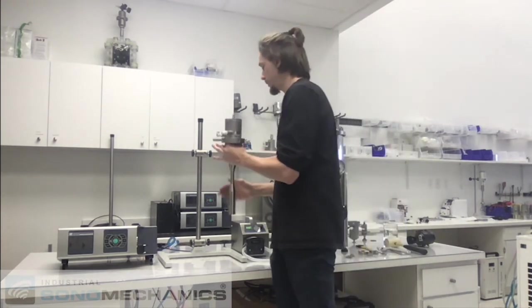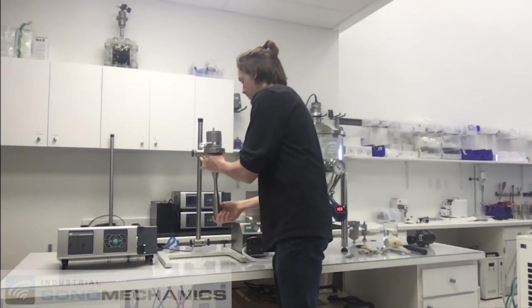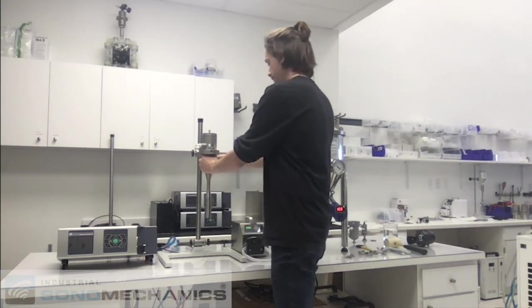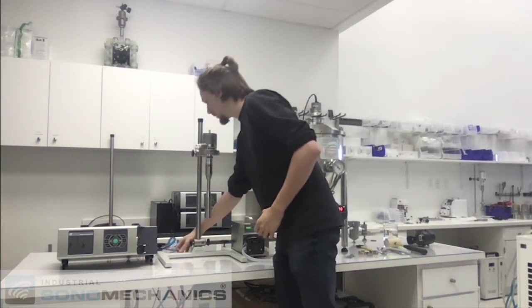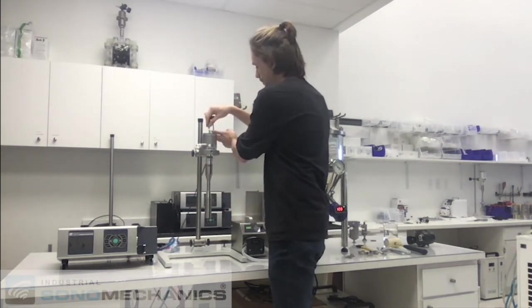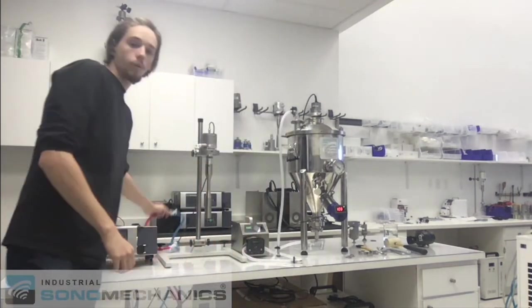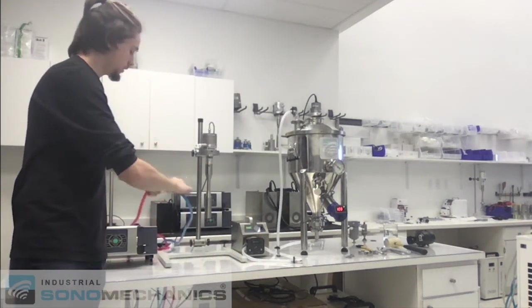Now we're going to place this stack to the clamp. Tighten down your clamp. And connect your ultrasound cable to the top and one pair of chiller lines.